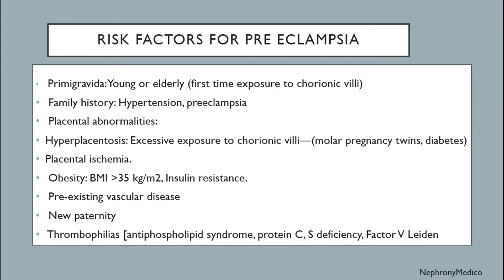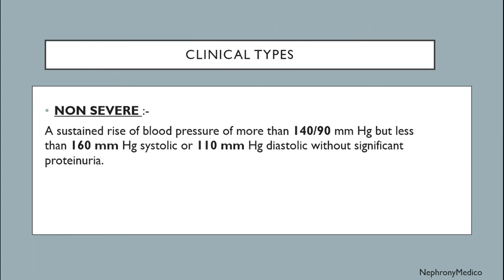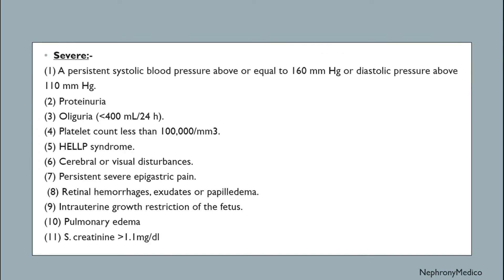Risk factors for preeclampsia include primigravida, young or elderly age, family history of hypertension or preeclampsia, placental abnormalities such as hyperplacentosis and placental ischemia, obesity, pre-existing vascular disease, new paternity, and thrombophilia. Clinical types: non-severe — a sustained rise of blood pressure more than 140/90 mmHg but less than 160 mmHg systolic or 110 mmHg diastolic, without significant proteinuria.